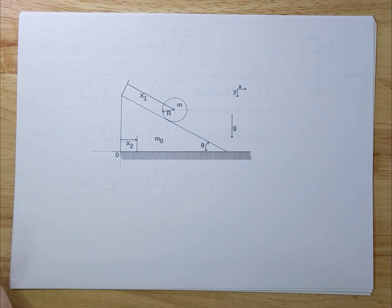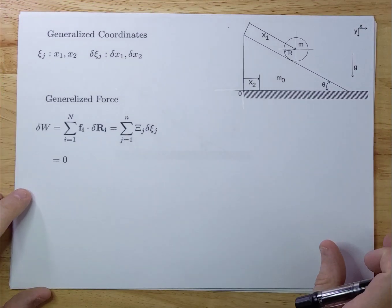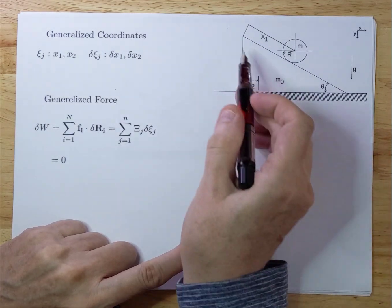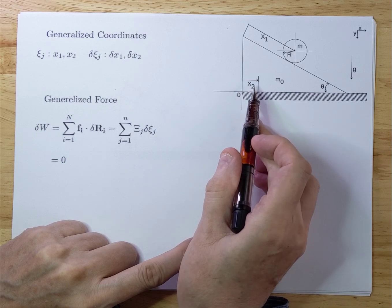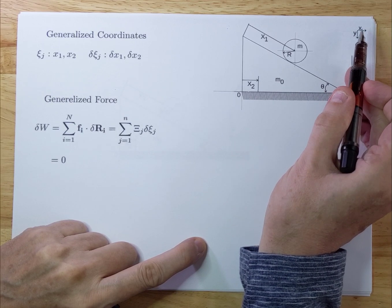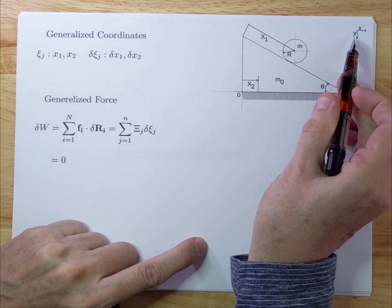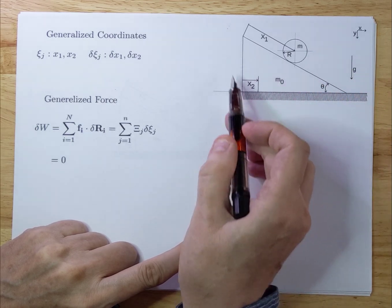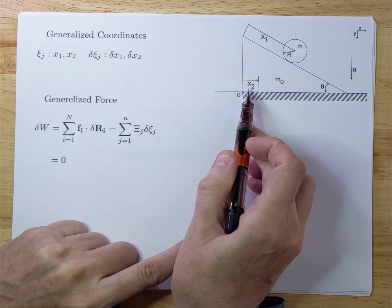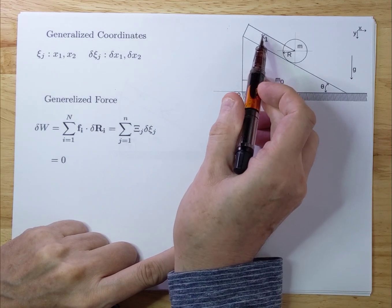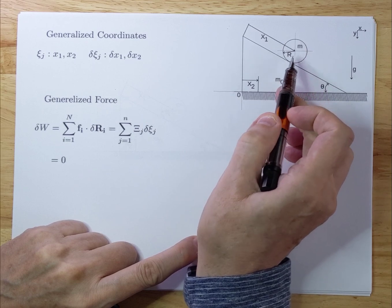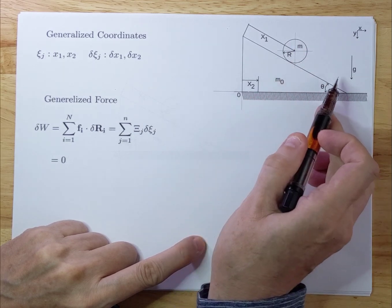I'm going to use the Lagrangian method to solve this. There are two generalized coordinates. The wedge has coordinate x2 moving in the x-direction, where x is positive and y is downward positive. The wedge moves with generalized parameter x2, and there is a generalized parameter x1 that describes the disc rolling down — it's not sliding, it's rolling, and it moves in that direction.